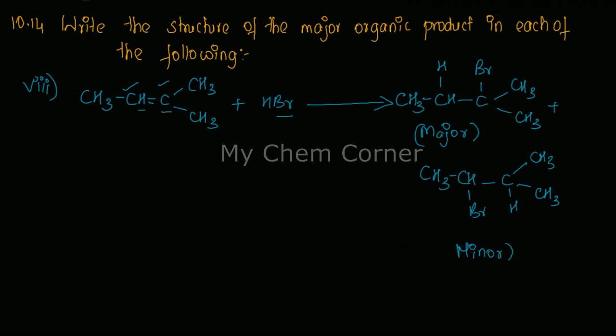And this will be the minor product. So if you are trying to name them, you are going to start from that carbon where the functional group gets the least count. So I'm going to start from here: one, two, three, and four. So when I try to name them, this is going to be 2-bromo-2-methylbutane.